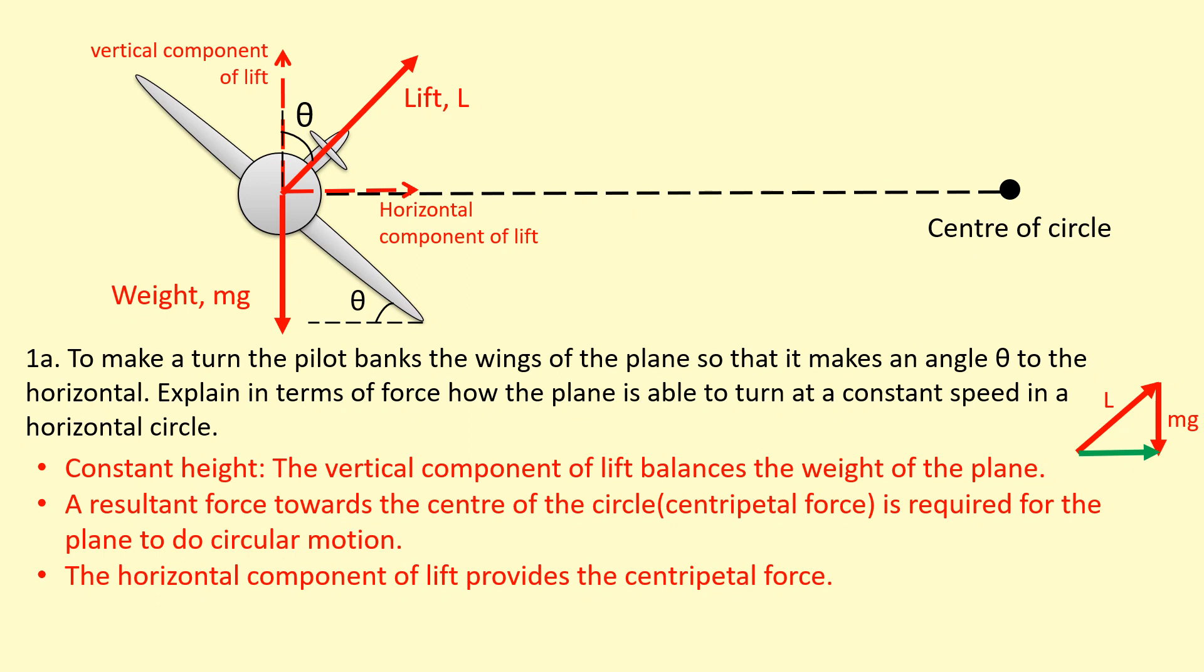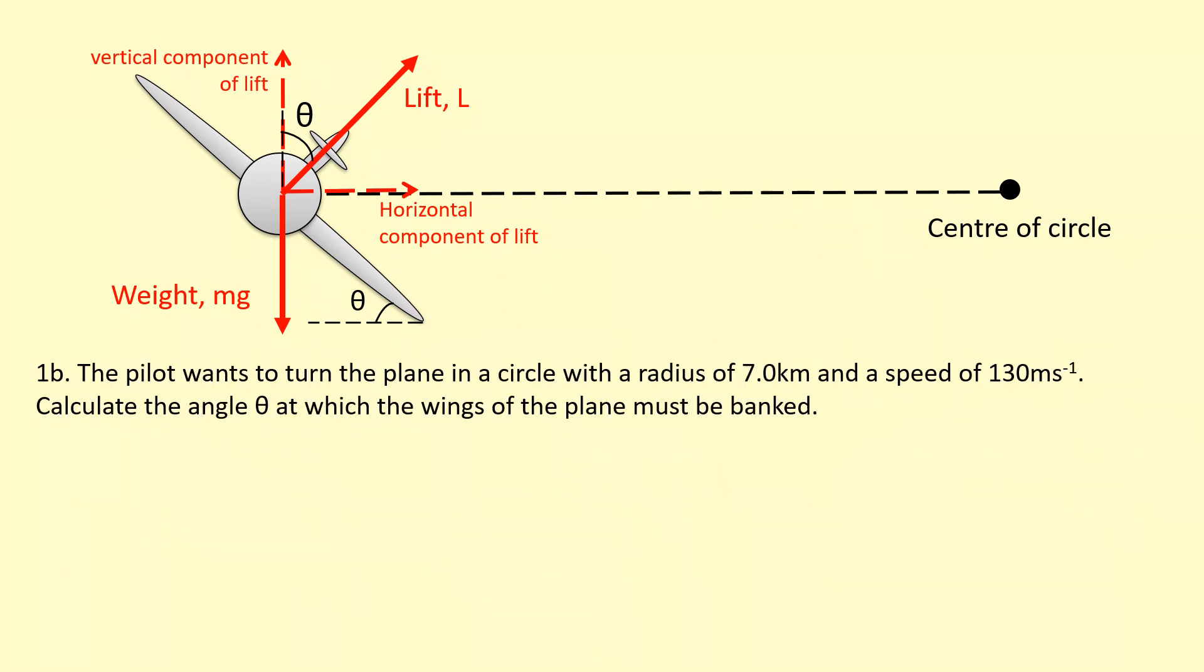The pilot wants to turn the plane in a circle with a radius of seven kilometers at a speed of 130 meters per second. Calculate the angle theta at which the wings of the plane must be banked.